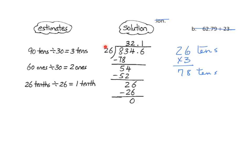Again, I'll take my divisor and I round it to 30. I take my 54. I'm looking for a compatible number divisible by 30, and 60 becomes my rounding for my dividend part of the problem. We have an estimate of 2 ones.